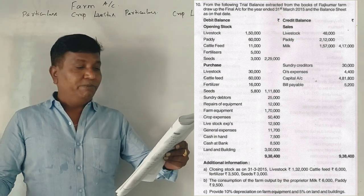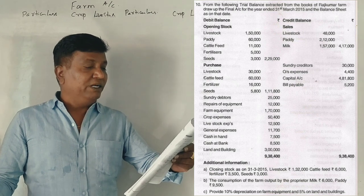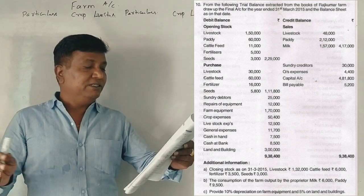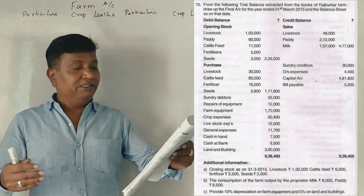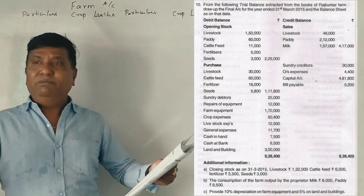Sundry debtors, repairs of equipment, farm equipment, crop expenses, livestock expenses, general expenses, cash in hand, cash at bank, land and building.